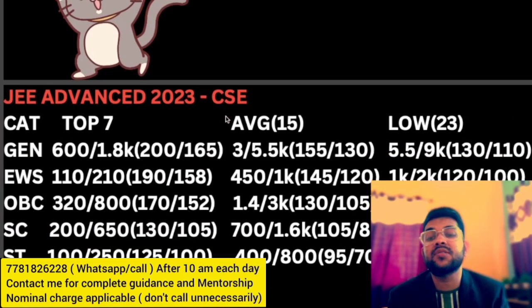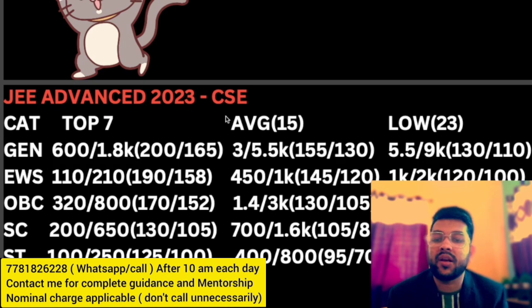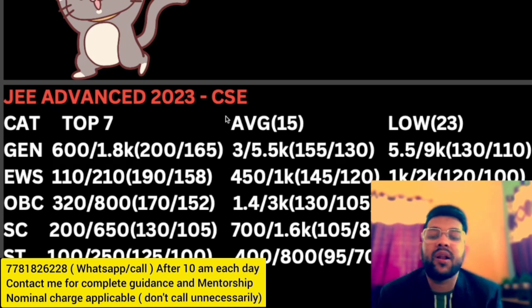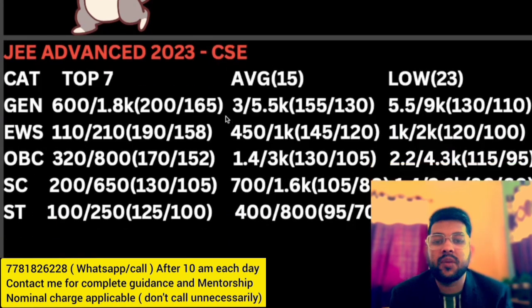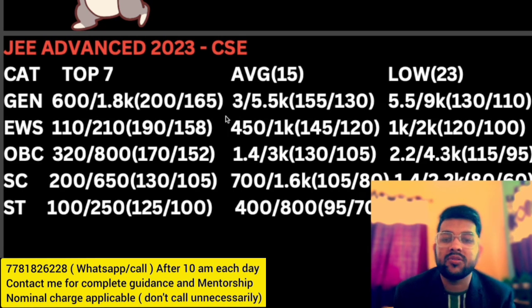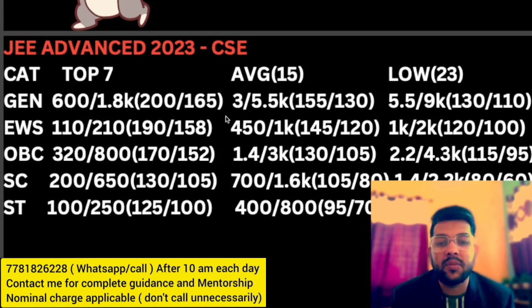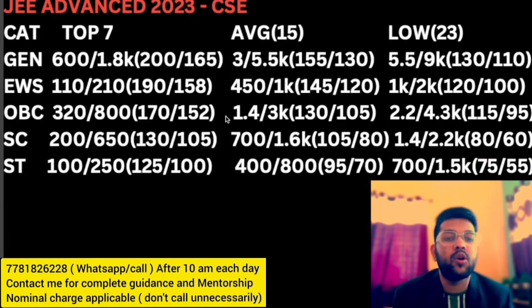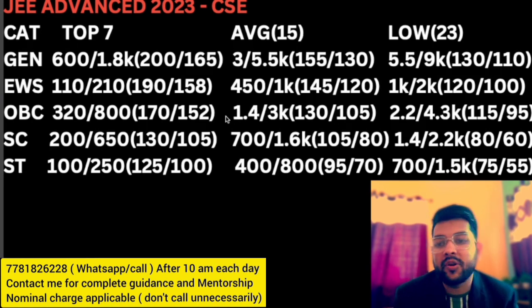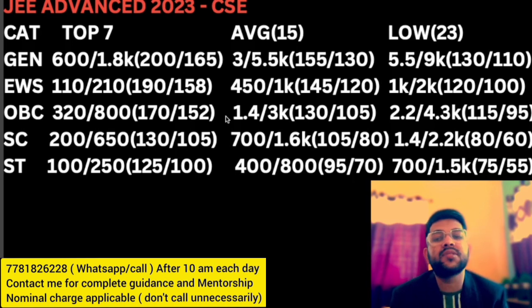For the top 7 IITs with CSE: General rank around 600 to 1,800, marks required 200 to 165 for male and female respectively. For average IITs with CSE: rank 3,000 to 5,000, marks required 155 to 130. For EWS: rank 450 to 1,000. For OBC: rank 1,400 to 3,000. For ST: rank 700 to 1,600. For ST: rank 400 to 800 — these are male and female figures. For lower IITs with CSE: General rank 5,500 to 9,000, EWS 1,000 to 2,000, OBC 2,200 to 4,300, SC 1,400 to 2,200, ST 700 to 1,500.